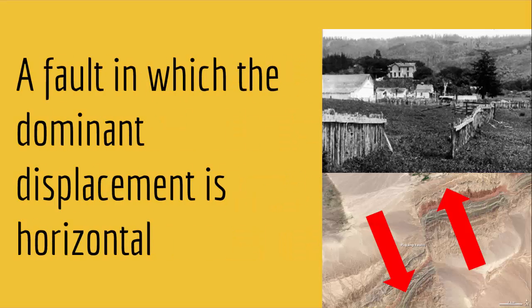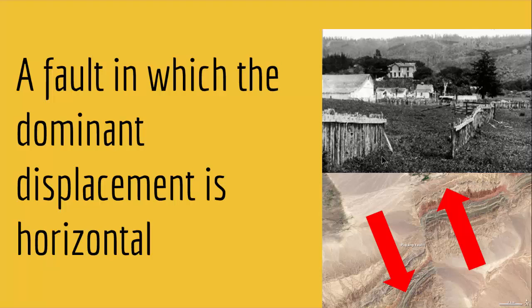Now let's look at strike slip faults. Strike slip faults are faults in which the dominant displacement is horizontal. As you can see in this aerial photo, these beds had a fault between them and moved horizontally. If you stand right here, this part went left while this part went right. The movement was horizontal, not at an angle — this is an example of strike slip faulting.